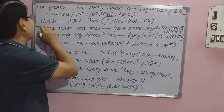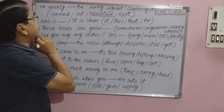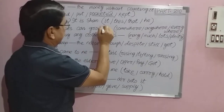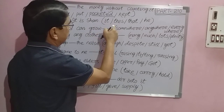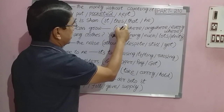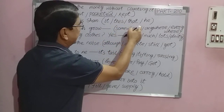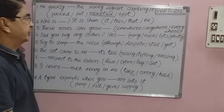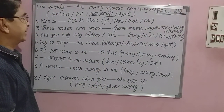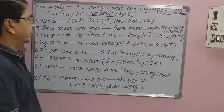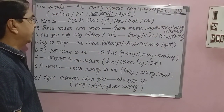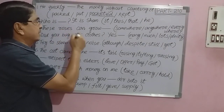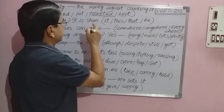Question number two: 'Who is that? It is ___.' Options include: D) he. Pick up the correct answer.